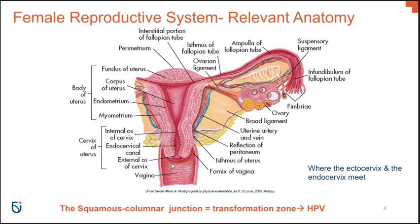The cervix really acts as a mechanical barrier to infectious microorganisms that could enter into the vagina. This opening actually contains a thick sticky mucus plug that exists during parts of the female cycle as well as through pregnancy, really to act as a barrier to those infectious microorganisms that will inevitably enter the area.